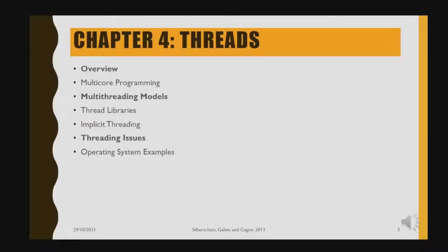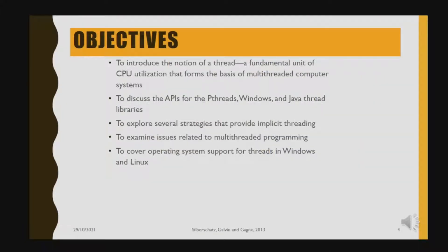In Chapter 4 there are two main subtopics: the first part is about the multi-threaded model and the threading issues. The objective for this chapter is to introduce the notion of a thread — a fundamental unit of CPU utilization that forms the basis of a multi-threaded computer system.